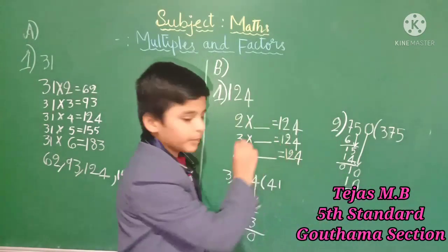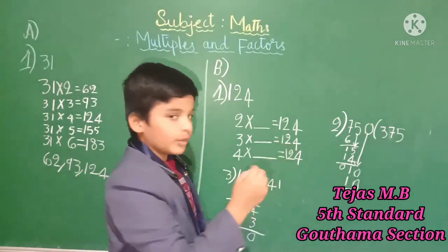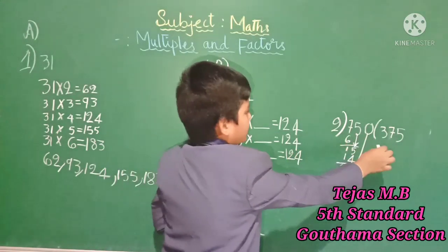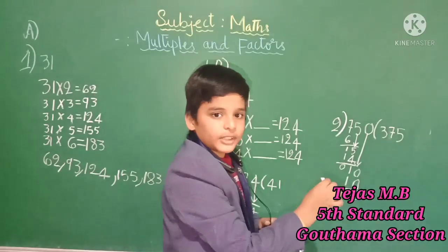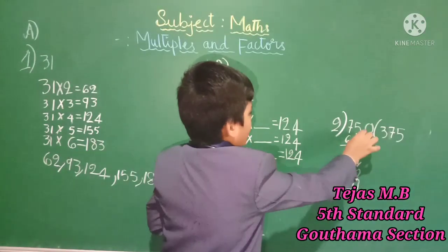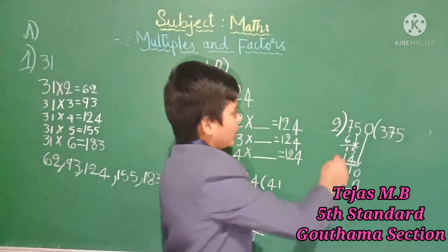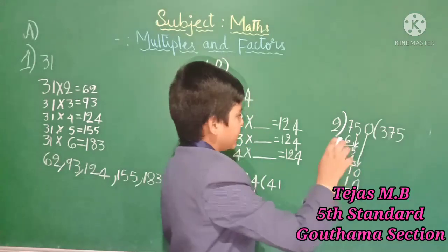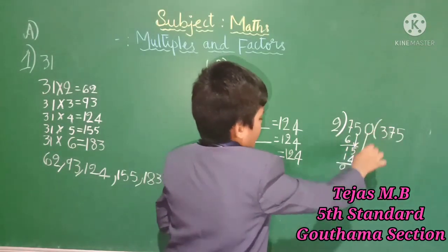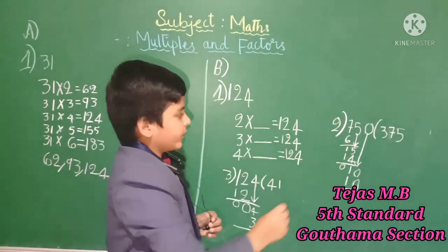The first problem is 124. We have 2 times dash equals 124, so we want to divide. In the 2 tables, checking: 2 times 3 is 6 — we have 1 remaining, take the 5 down. In the 2 tables, 15 is not coming exactly, so we take the lesser number: 2 times 7 is 14. We have 1 remaining, take 0 down. 2 times 5 is 10 — it is equally divided. So we want to write the quotient in the appropriate place.